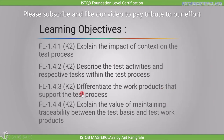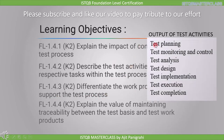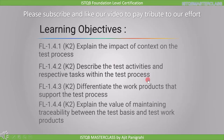The third topic is: differentiate the work products that support the test process. After each test activity we get an output, which is referred to as a work product. In this topic we need to remember which work product belongs to which activity. The last topic is: explain the value of maintaining traceability between the test basics and test work products, where we will learn more about traceability.